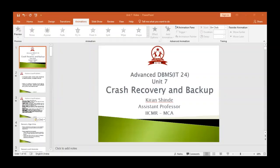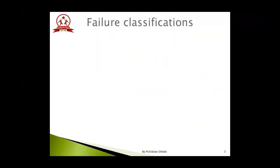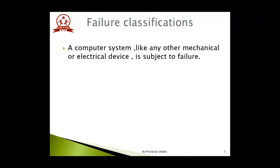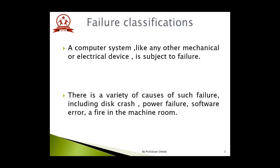First of all, we are going to understand the various types of failures that take place in a database system, and then we will try to understand the various recovery measures so that we can find some solution to such failures. A computer system, like any other mechanical or electrical device, is always subject to failure. There can be various causes such as disk failures, power supply failures, software or logical failures, natural calamity, or fire in the machine room.